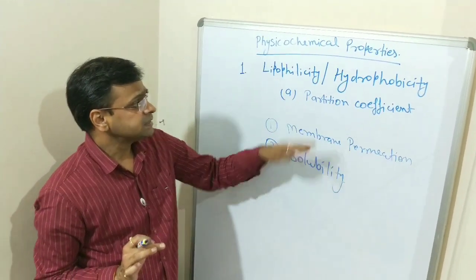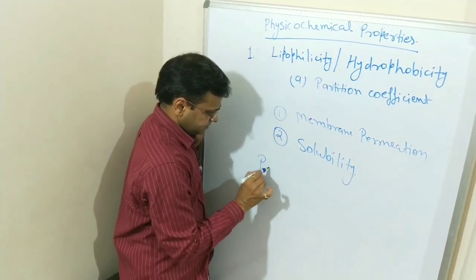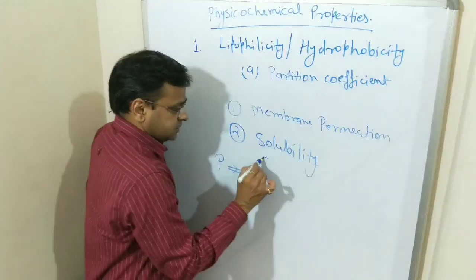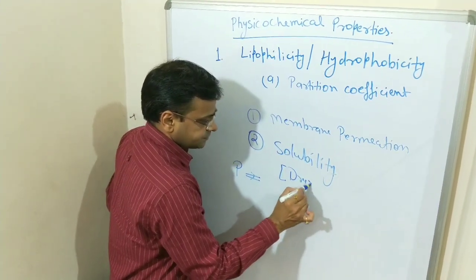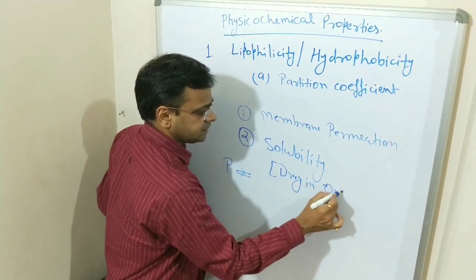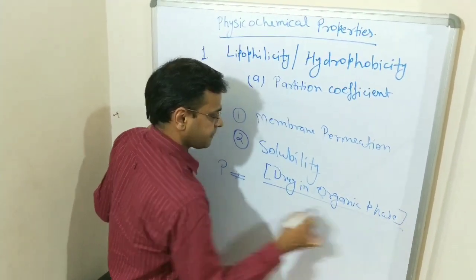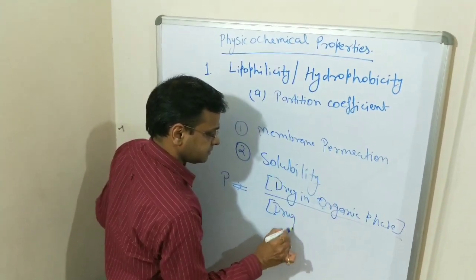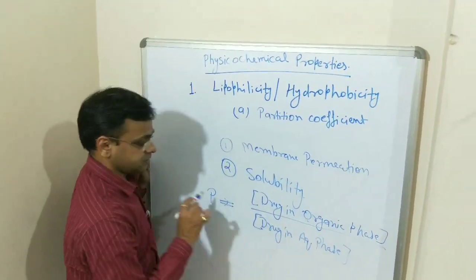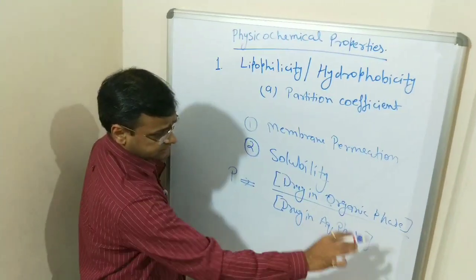So for measurement of partition coefficient, what we do? We just measure partition coefficient P equals to concentration of drug in organic phase over concentration of drug in aqueous phase. This is a ratio. Partition coefficient is the ratio of concentration of drug in organic phase upon concentration of drug in aqueous phase.